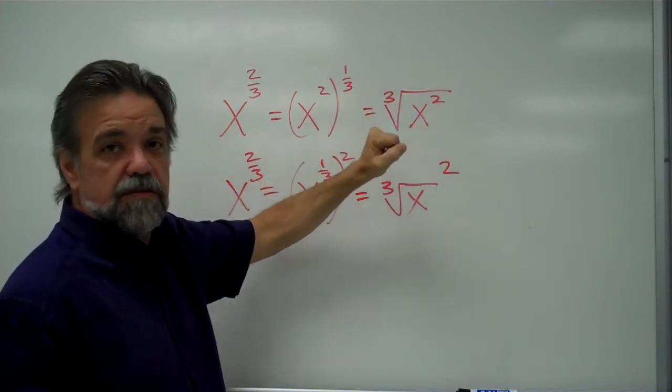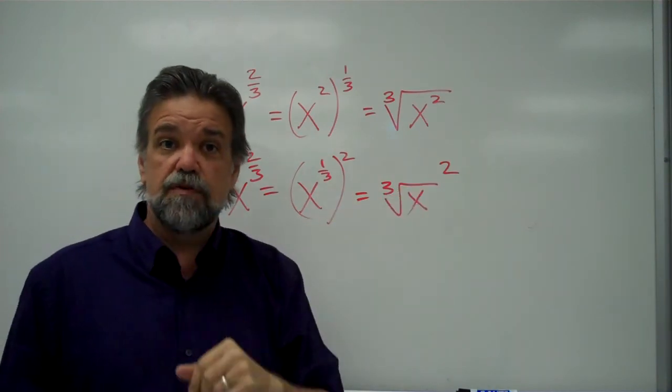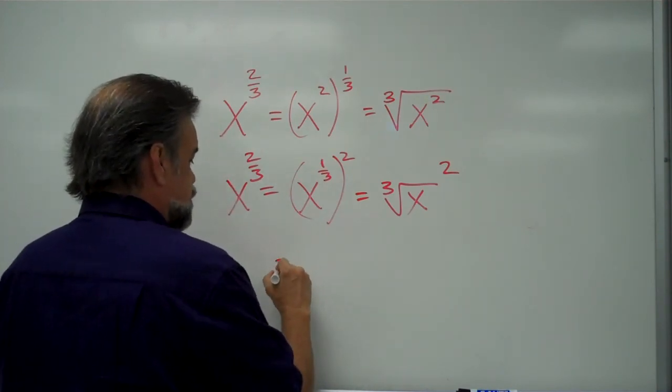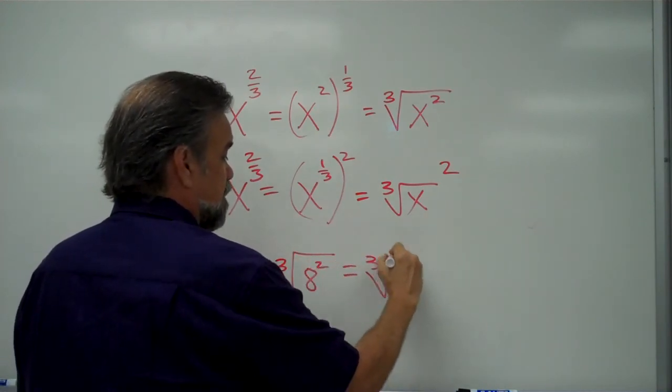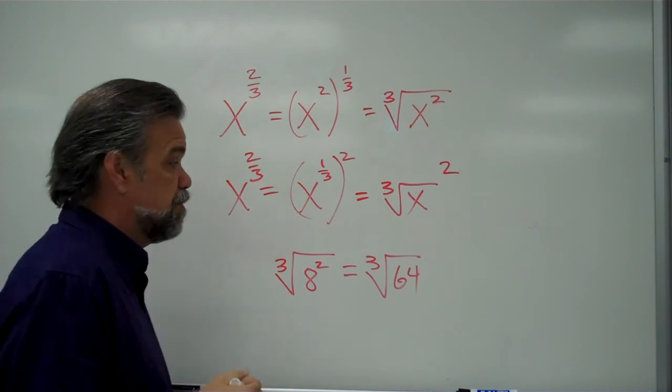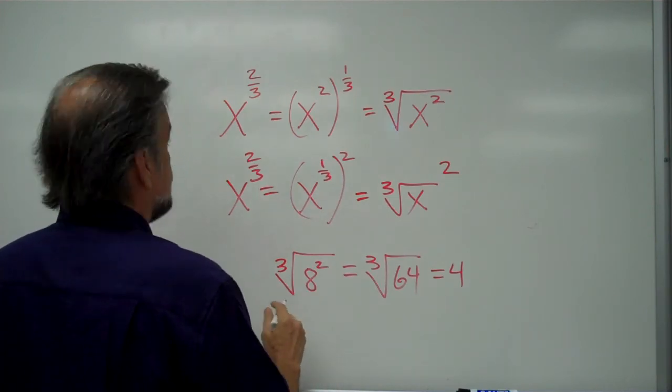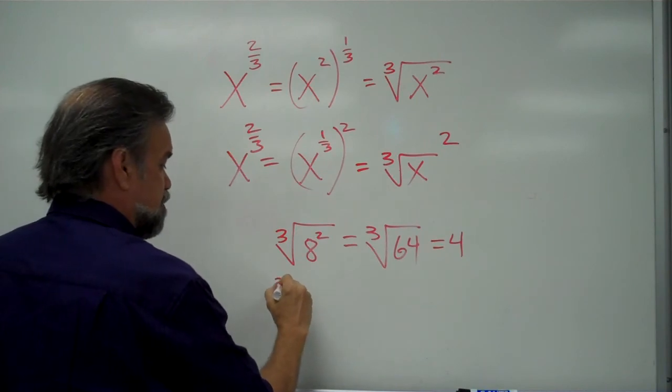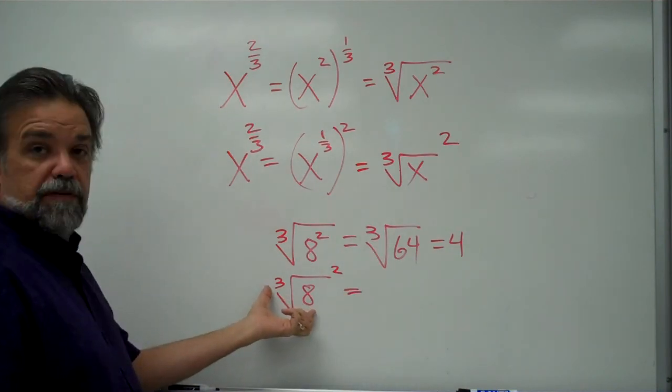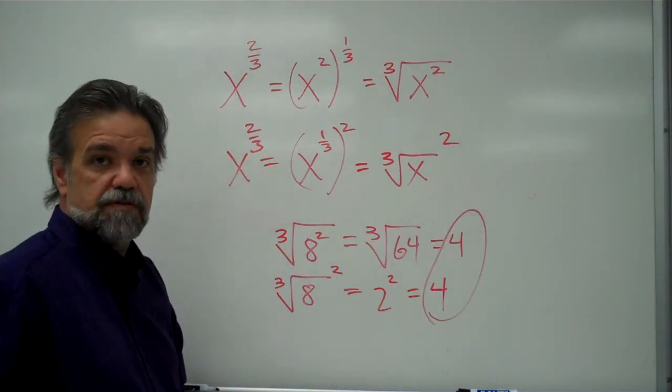This x, if you square it and then take the cube root, is going to give you the exact same value as taking this x, first take the cube root and then square it. Let me give you an example. Let's say x is 8. The cube root of 8 squared is the cube root of 64. And the cube root of 64 is the number that when you multiply it by itself 3 times, you get 64. And that is 4. Or, alternatively, I could say the cube root of 8 and then square it. That means I'm going to take the cube root of 8 first, which is 2. And I square that and I get 4. Same thing. So it doesn't matter what order you go in.